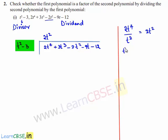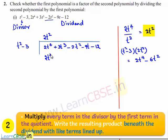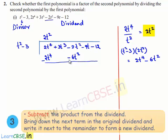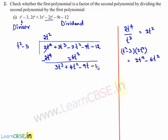The divisor t²-3 multiplied by 2t² equals 2t⁴-6t². This product, 2t⁴-6t², is written here. On subtracting: 2t⁴ and -2t⁴ cancel. We get 3t³, and -2t²+6t² gives +4t², and then -9t-12 carries down. So the new dividend is 3t³+4t²-9t-12.